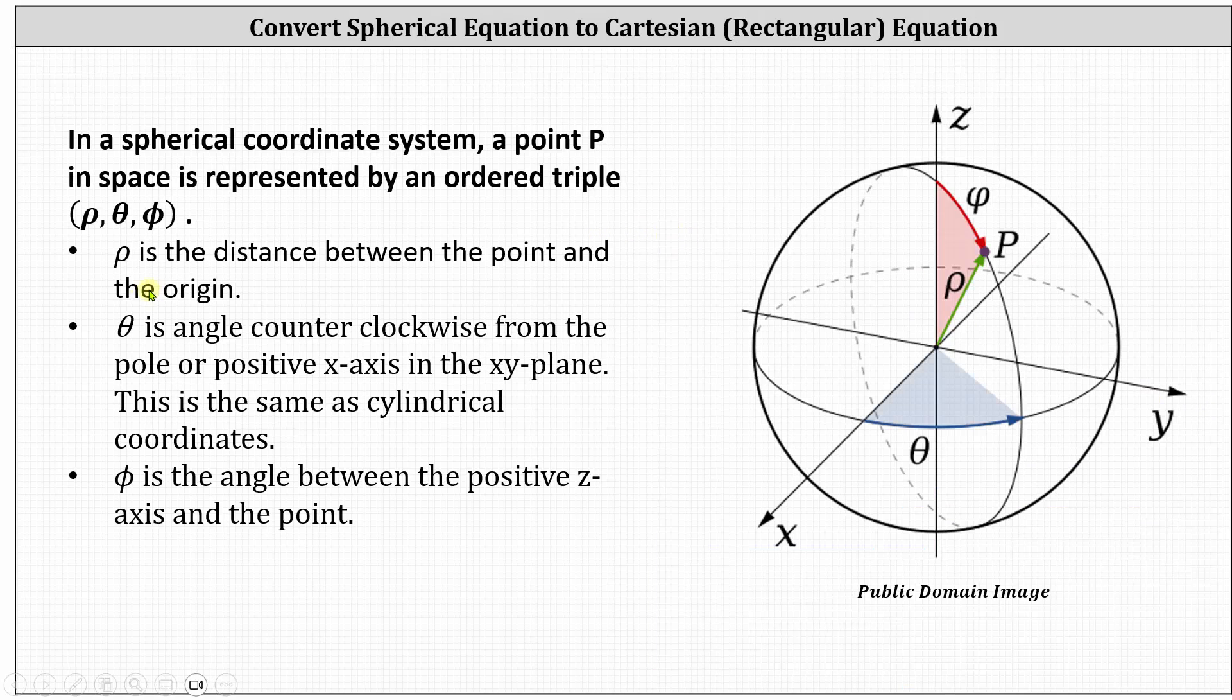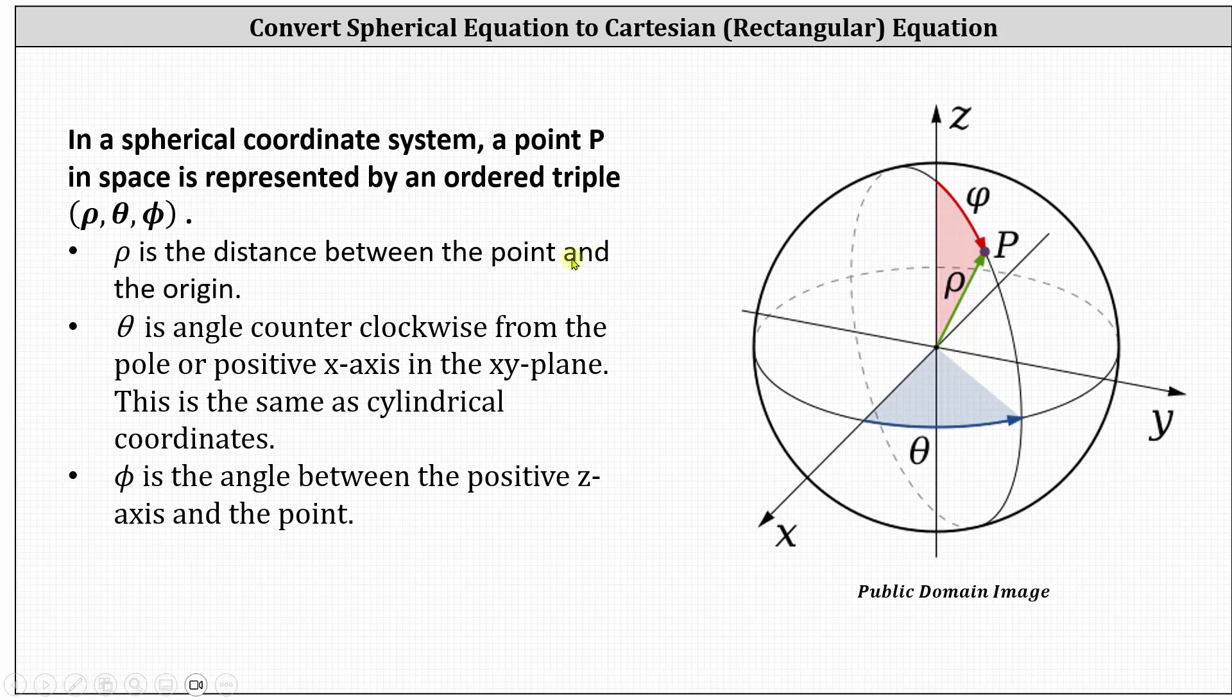Recall in spherical coordinates, ρ is the distance between the point and the origin. This indicates when we have the equation ρ = 3, the graph is a set of all the points three units from the origin, which we should recognize will be a sphere with radius three.